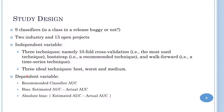As dependent variables, to understand if a technique is accurate, we used three metrics. The first is the recommended classifier AUC — a technique is accurate if it suggests the use of an accurate classifier. Then we use bias, which is the estimated AUC of a classifier minus the actual AUC, helpful to understand whether the technique overestimates or underestimates classifier accuracy. Finally, absolute bias captures the extent of the bias.